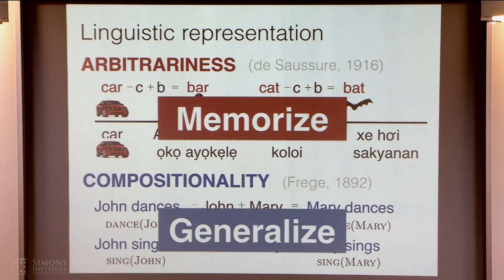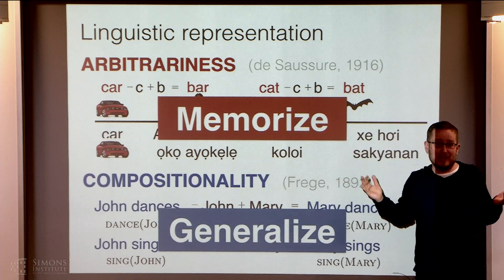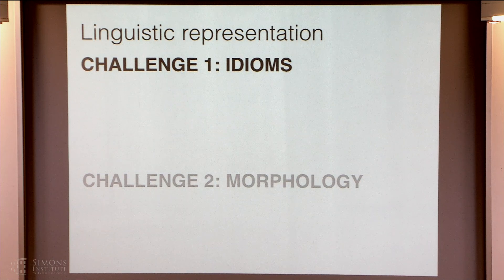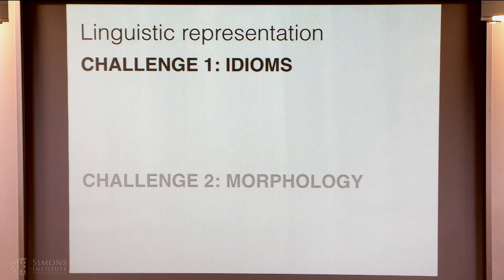Of course, these have two very different learning aspects. Here, all you've got — you can just memorize. If there's no relationship, you've just got to memorize it. Otherwise, we can generalize in some interesting way. I wouldn't be here if things were that simple — we have some challenges. First, we have idioms. I won't say much about idioms, because these are at the propositional level and I'm talking more at the word level during this talk.